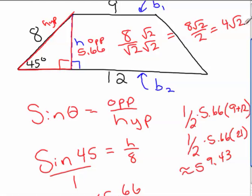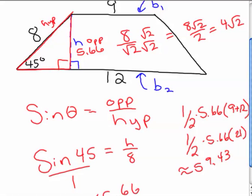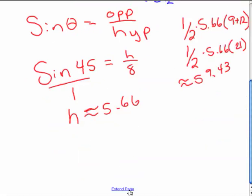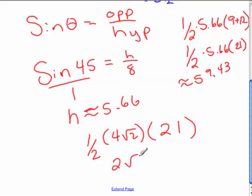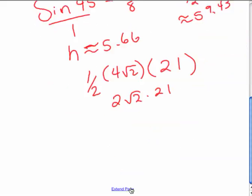And so you could actually figure it with that 4 root of 2. And so it would be 1 half times 4 root of 2 times your 21, your 9 plus 12. And so half of 4 is 2 root of 2 times 21.